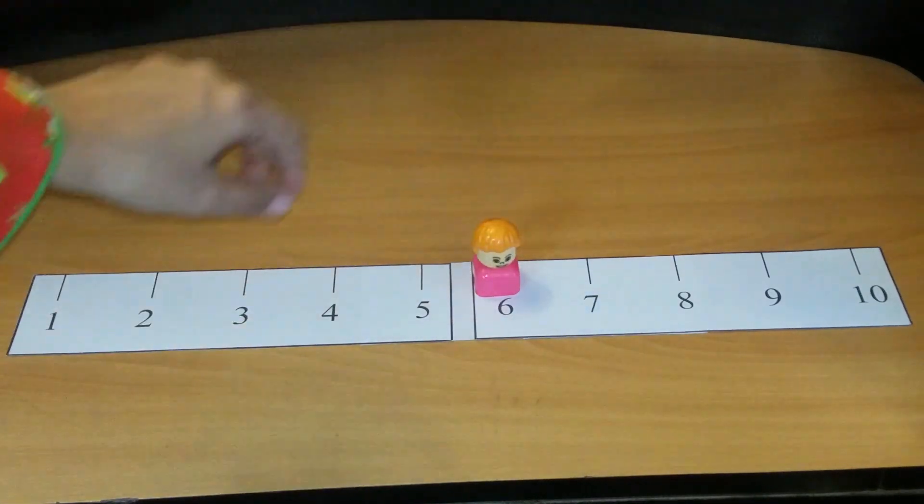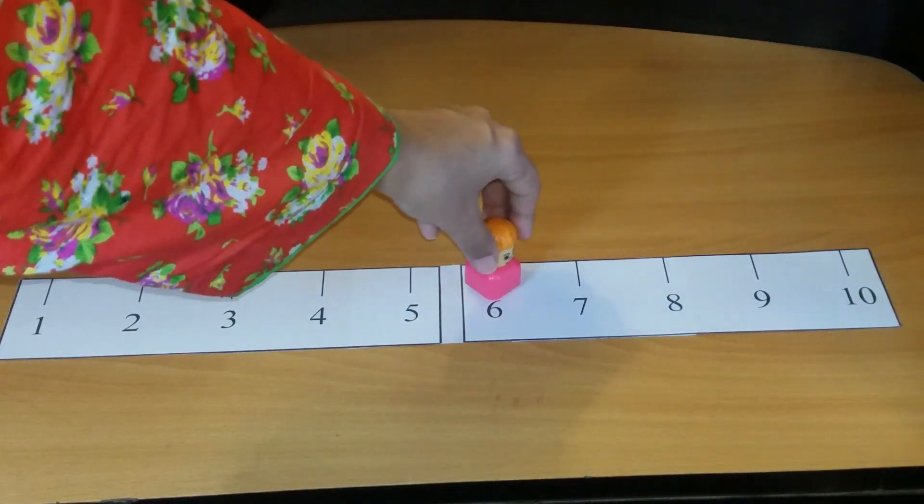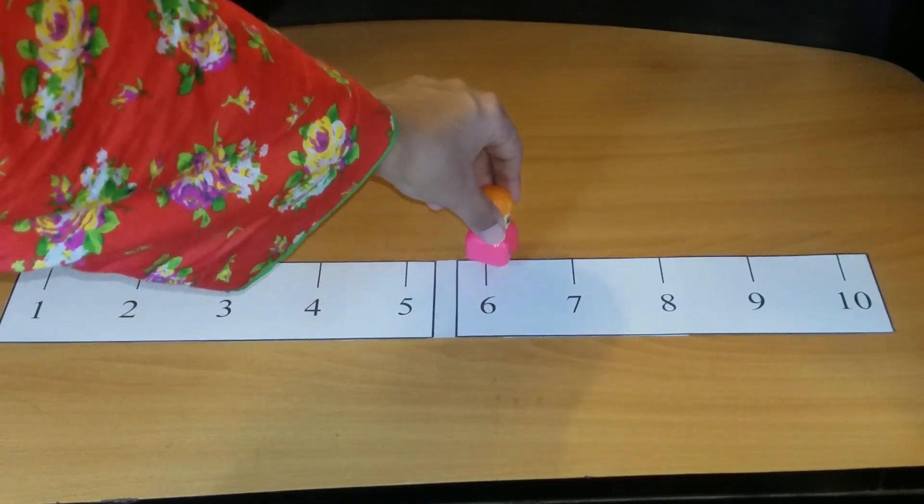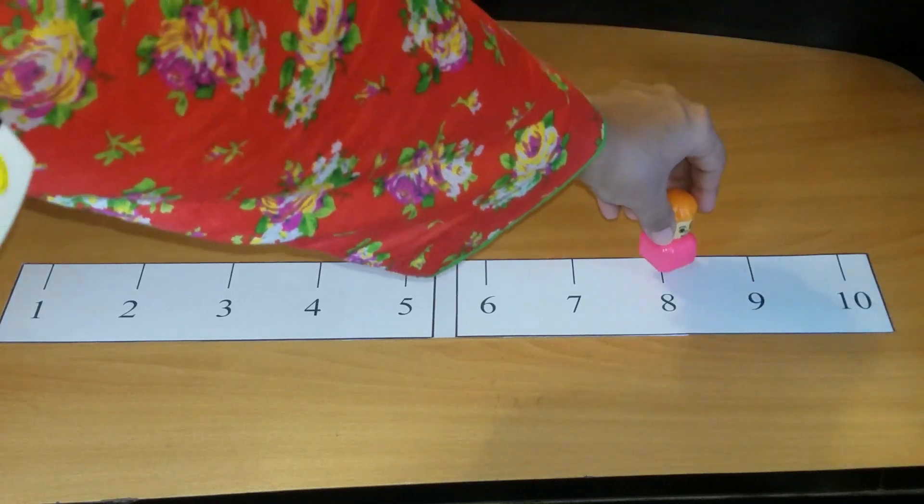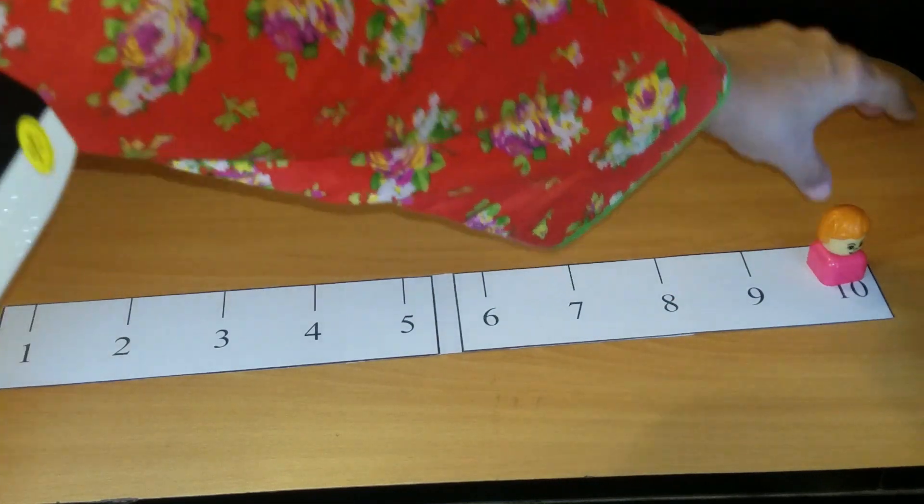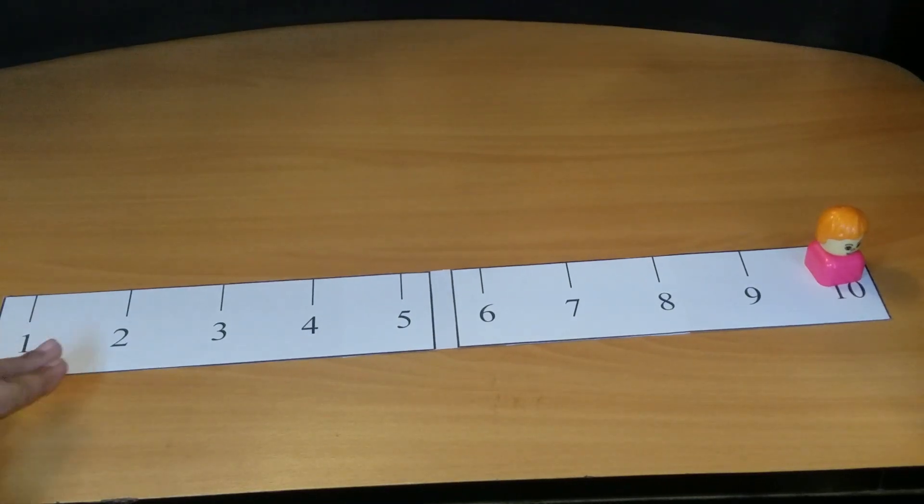And then skip the number and jump on six. And again skip the number, not on seven, not on seven. From here you have to skip and jump on eight, skip and jump on ten. So in this way you can make your child learn how to skip twos.